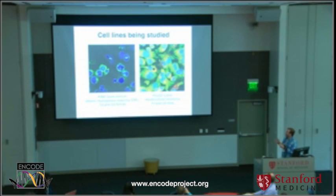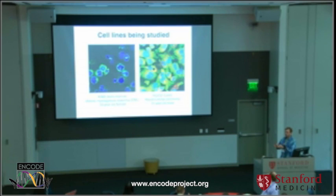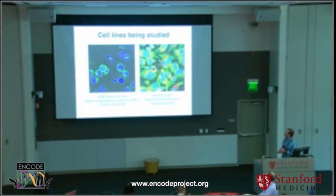We're conducting all of these assays in two different cell lines: K562 cells and HepG2 cells, which are being extensively studied by others within the ENCODE consortium. When you merge the RNA binding protein data with the transcription factor, DNA methylation, and histone ChIP-seq data, we'll have a very large collection of genetic data to really understand how these particular cells work.